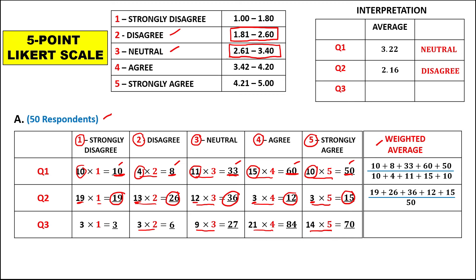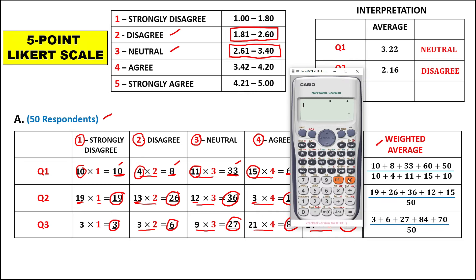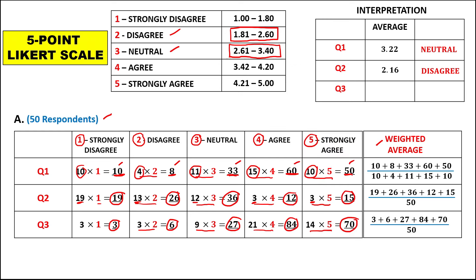For question number 3, to compute the weighted average, we add 3 plus 6 plus 27 plus 84 plus 70, then divide by 50. That equals 3.80. The average of 3.80 belongs to the scale from 3.42 to 4.20, so most of the respondents agree.